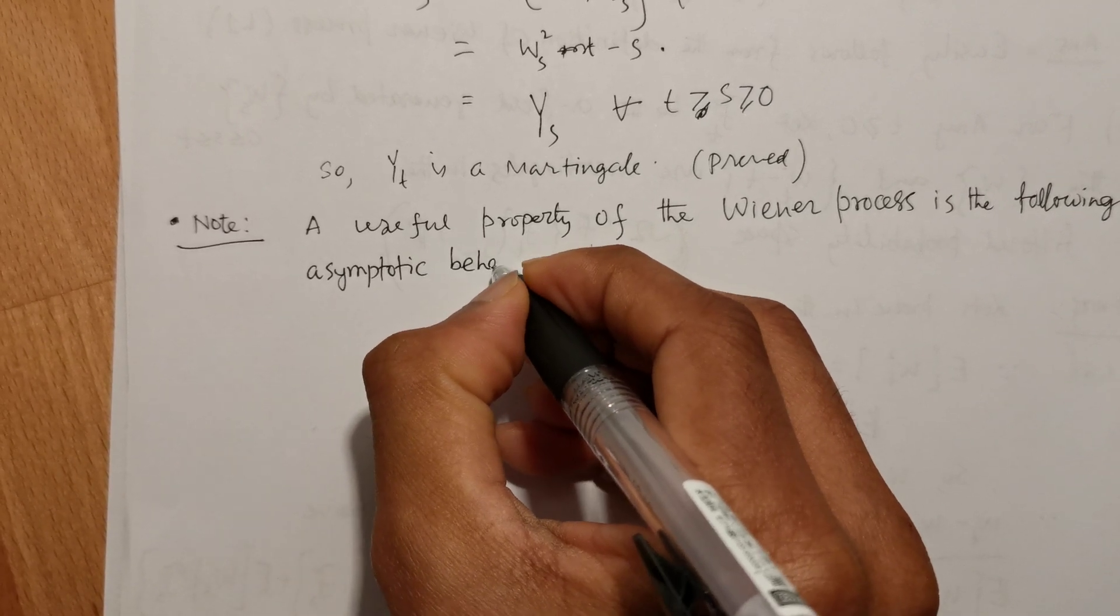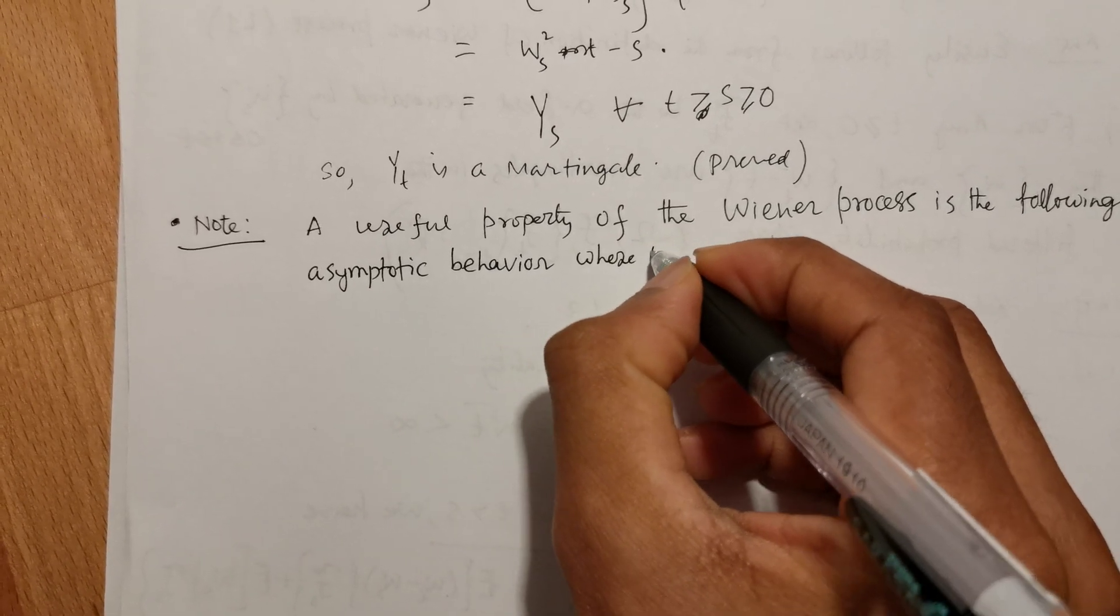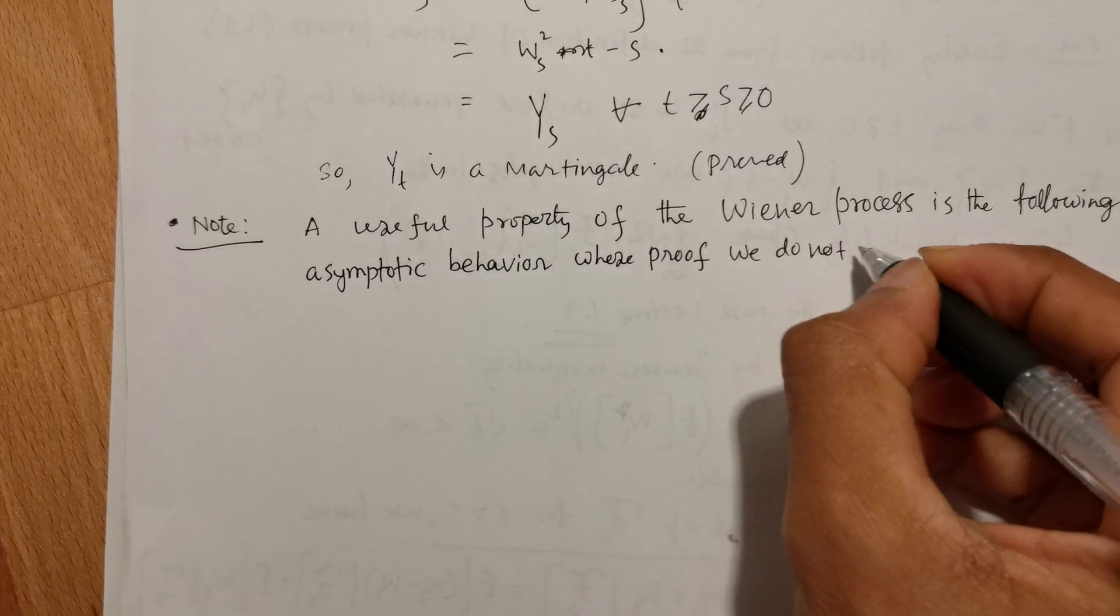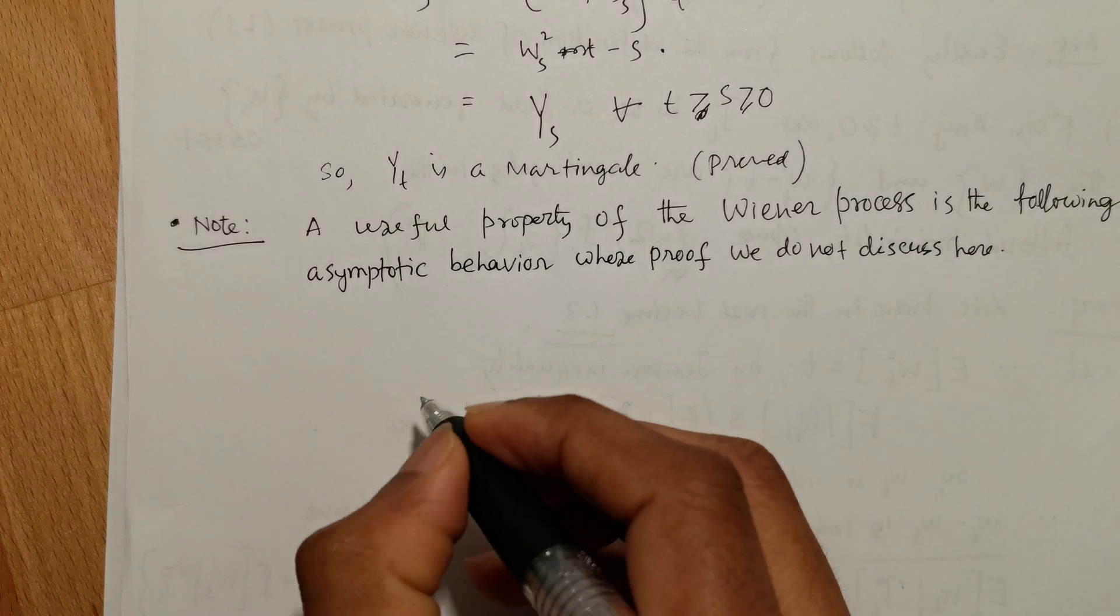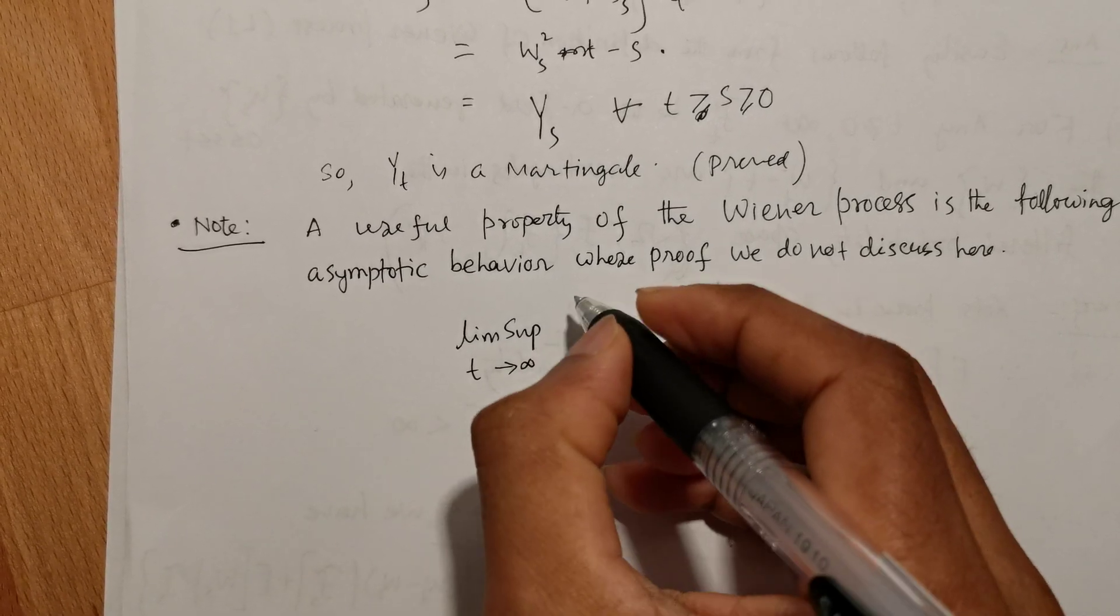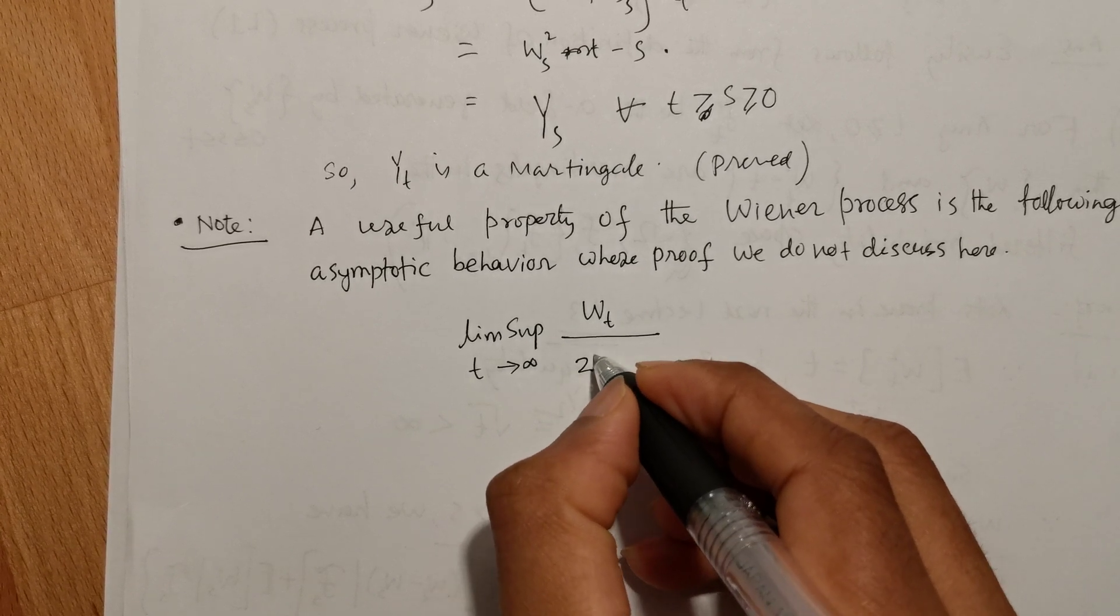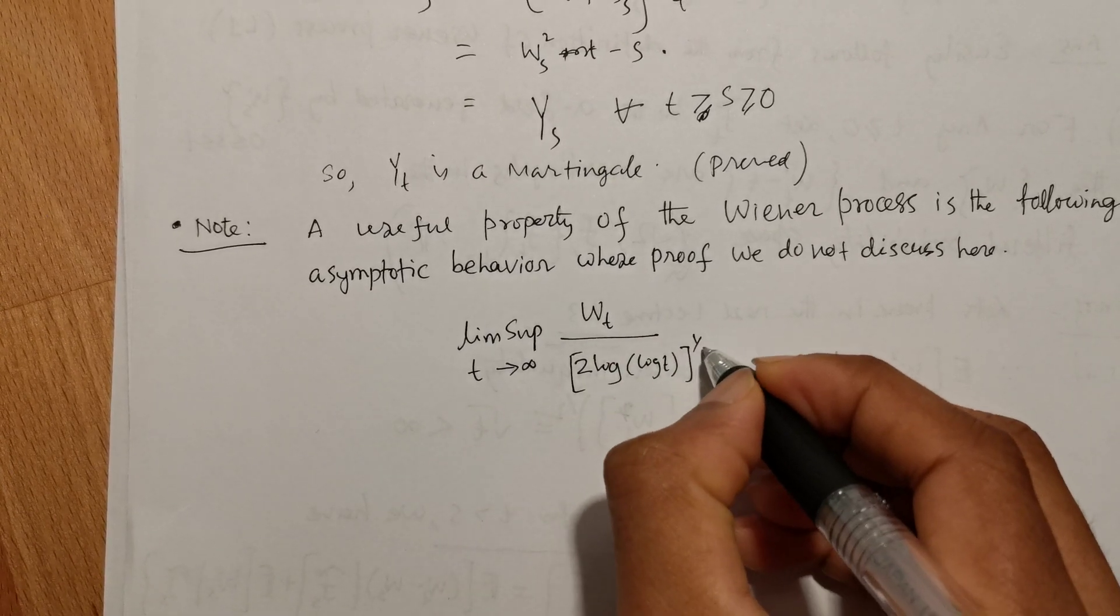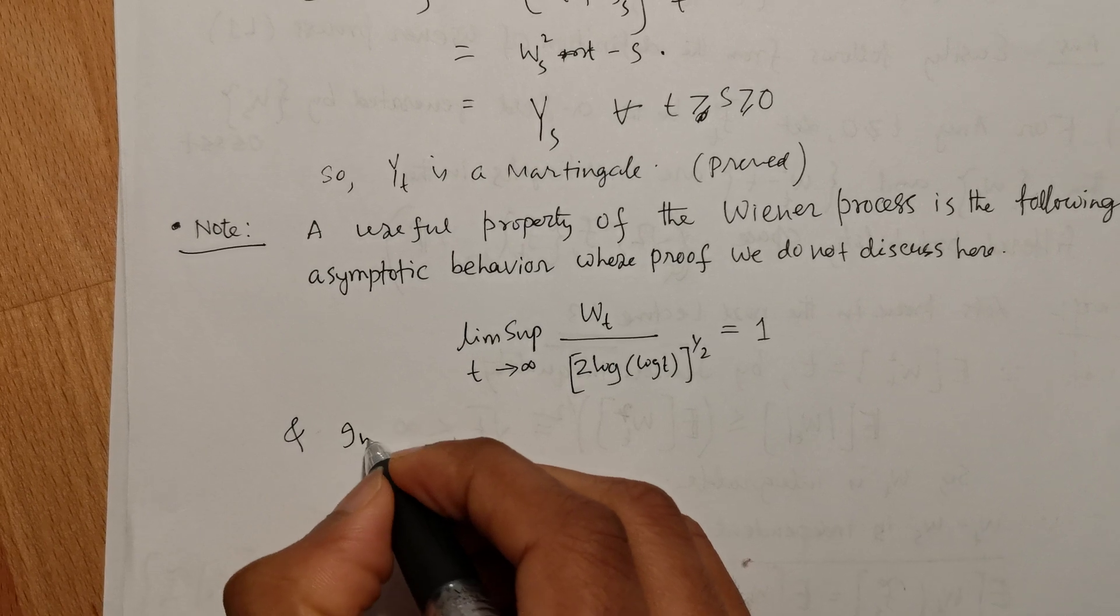lim t→∞ Wt/(2log(log t))^(1/2) = 1, and in particular, the above asymptotic relation implies that